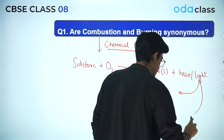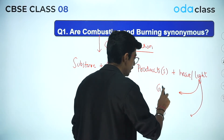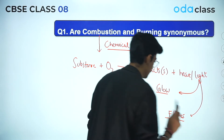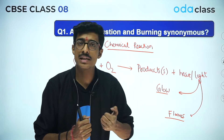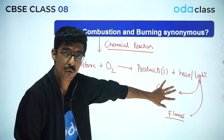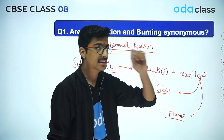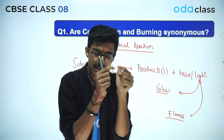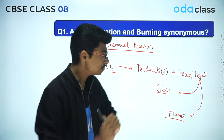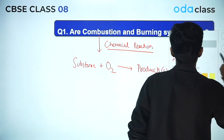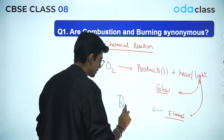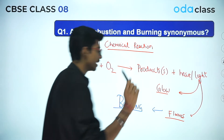There can be a single product or more than one product. At the same time it will also generate heat as well as light energy. So this chemical process in which a substance reacts with oxygen to form products and heat and light energy is known as combustion. Now the light energy can be of two types: the first one can be a glow, and the second one is light energy produced in the form of flames. For example, if you ever see charcoal burning, it has a red tinge — that is a glow.